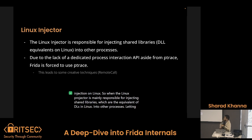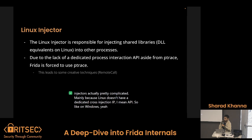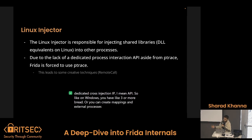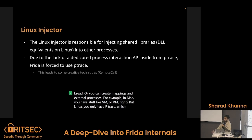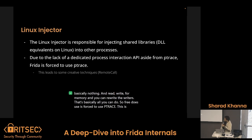The Linux injector is actually pretty complicated, mainly because Linux doesn't have a dedicated cross-injection API. On Windows you have stuff like CreateRemoteThread, or you can create mappings in external processes. On Mac you have stuff like vm_allocate, vm_read, and vm_write. But in Linux you only have ptrace, which does basically nothing — you can read and write memory and read and write registers. That's basically all you can do. So Frida is forced to use ptrace.